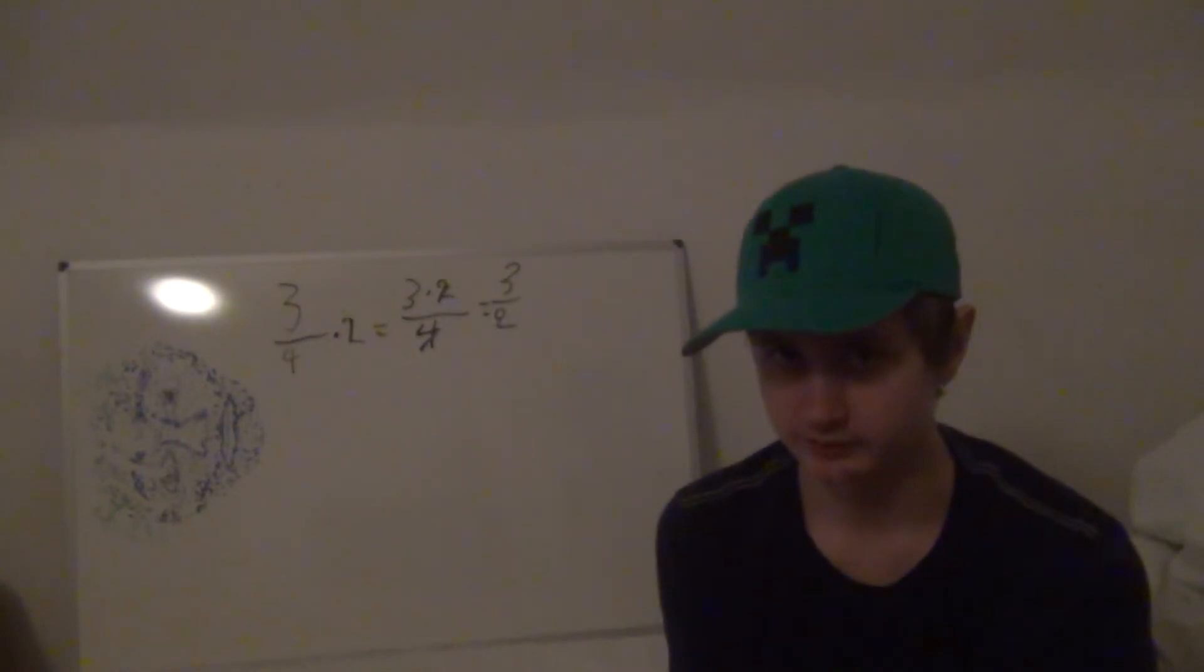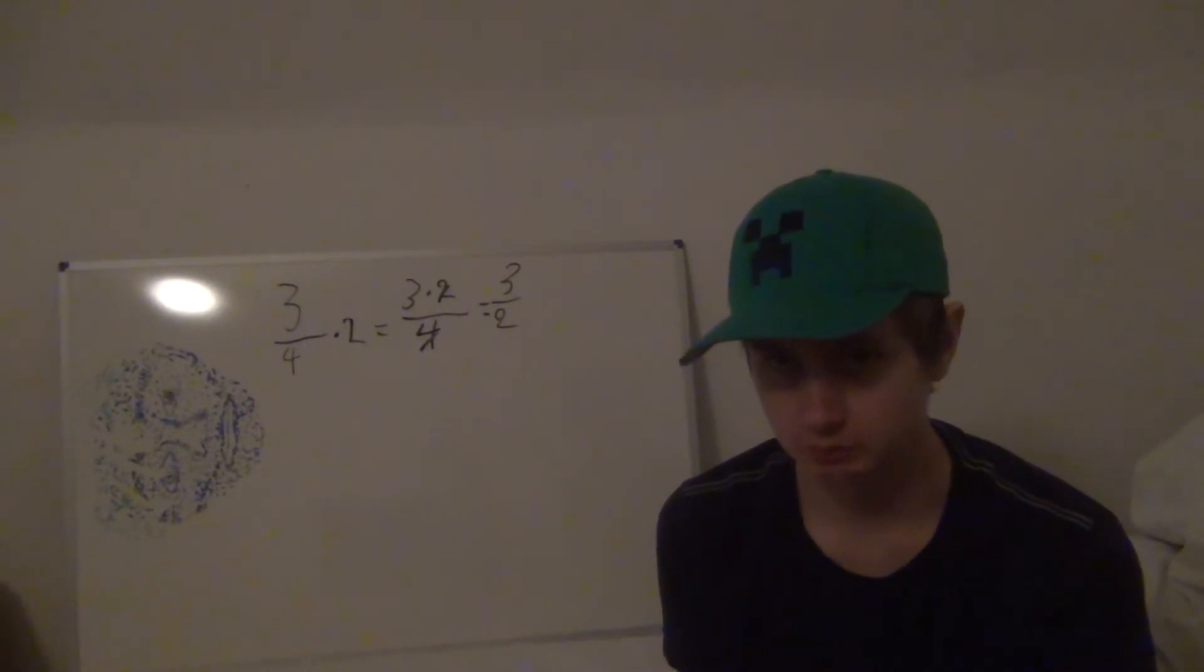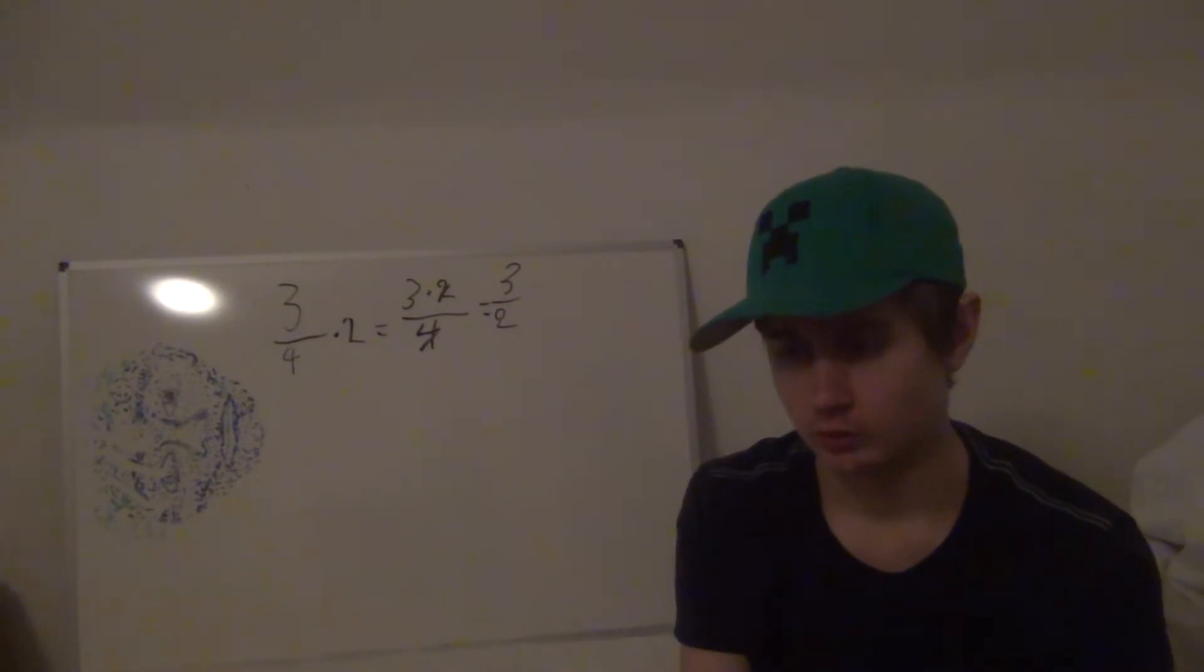The bigger the divisor is, the smaller the number is. So since I'm dividing by 2, which is making it smaller, then the division would have the divisor get bigger, because a bigger divisor means a smaller number.